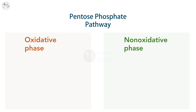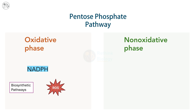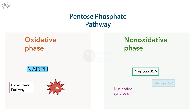The pentose phosphate pathway can be divided into two phases: the oxidative phase and the non-oxidative phase. The oxidative phase generates NADPH, which is required for many biosynthetic pathways and for detoxification of reactive oxygen species, or ROS. The non-oxidative phase interconverts C3, C4, C5, C6, and C7 monosaccharides to produce ribose 5-phosphate for nucleotide synthesis, and also regenerates glucose 6-phosphate to maintain NADPH production by the oxidative phase.